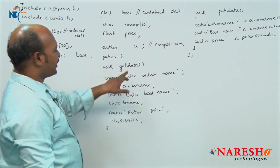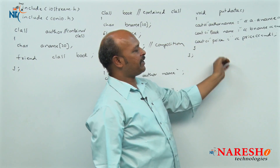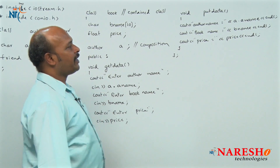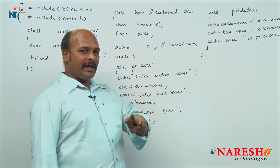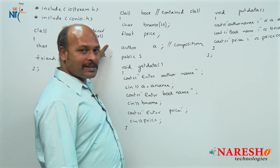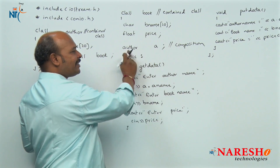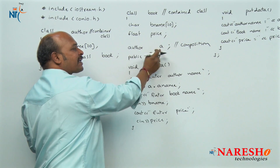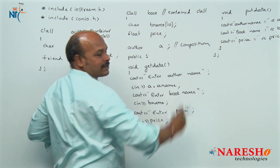Now how to call the member functions. In the previous example, the container class object was declared as an argument. But this time it is not an argument — the container class object is directly declared inside the contained class.